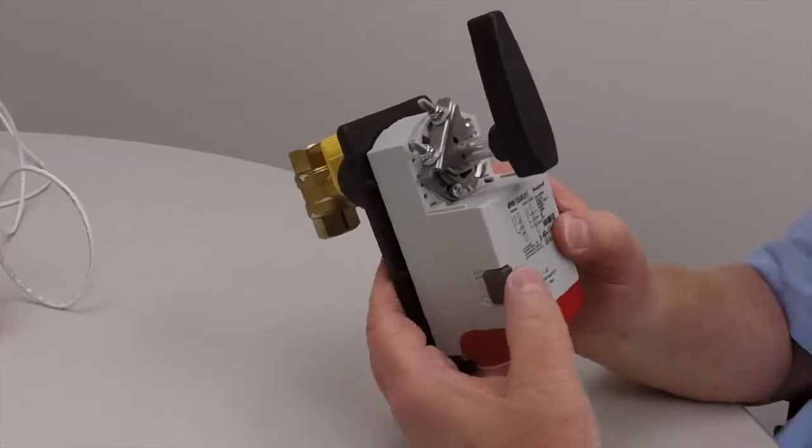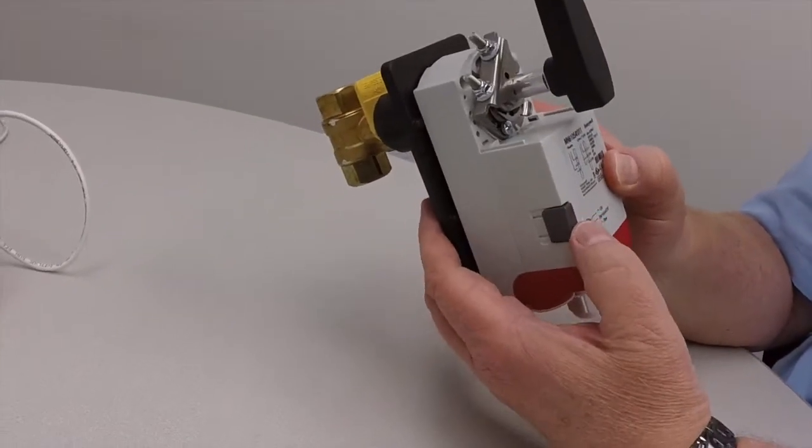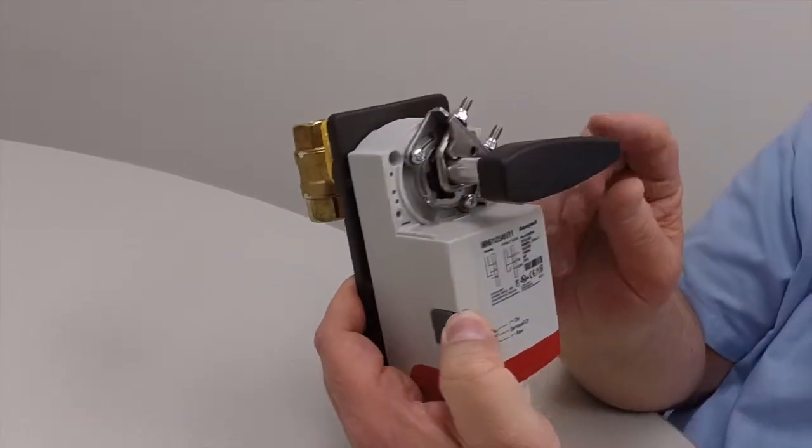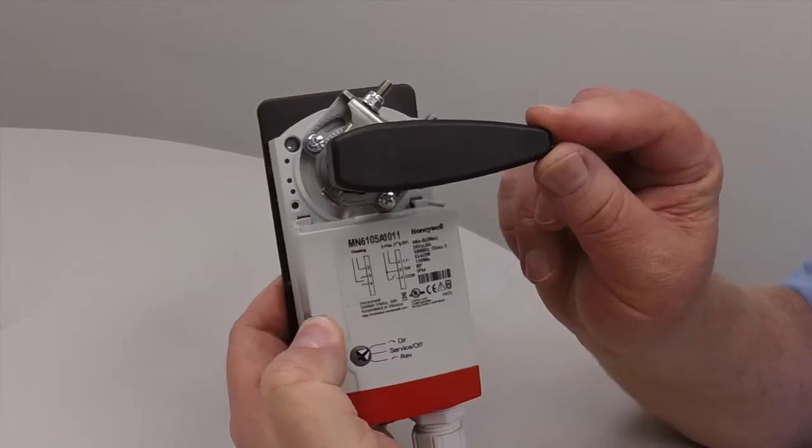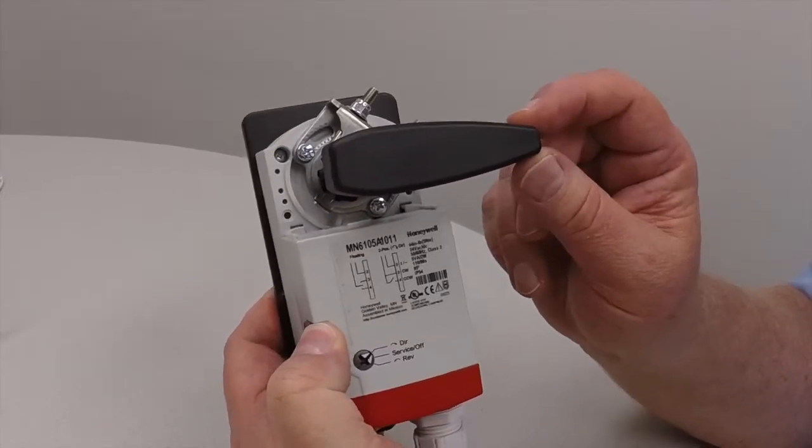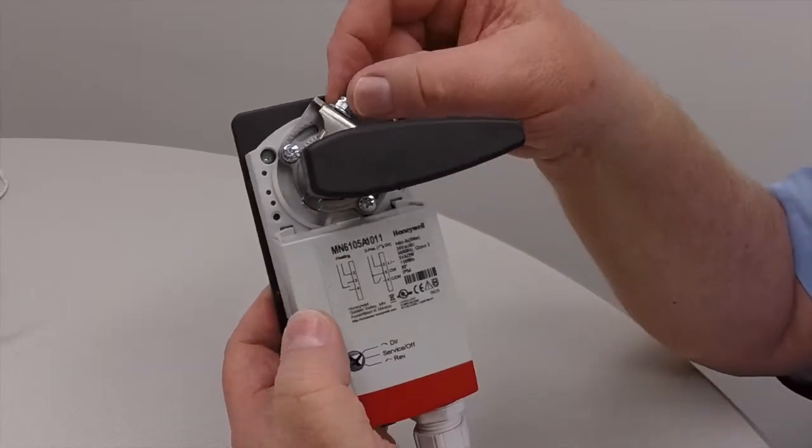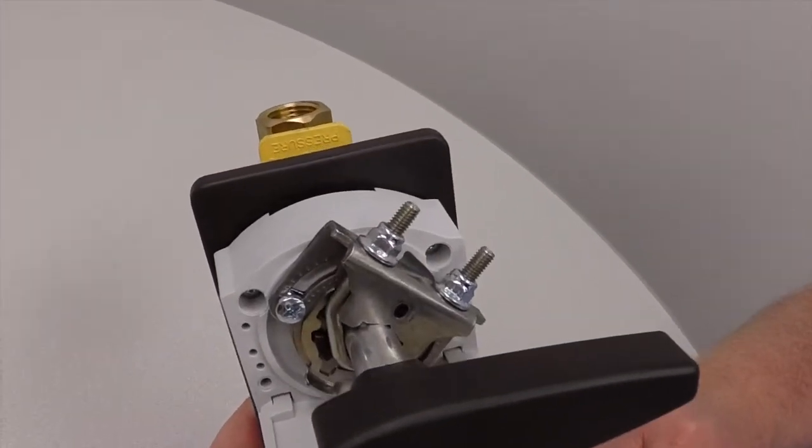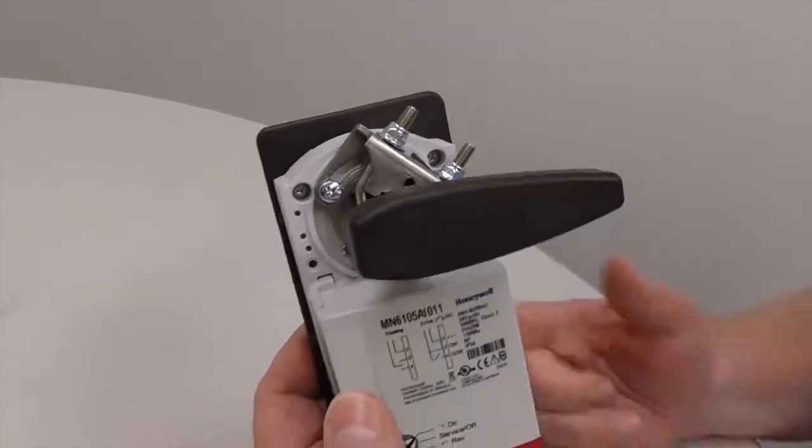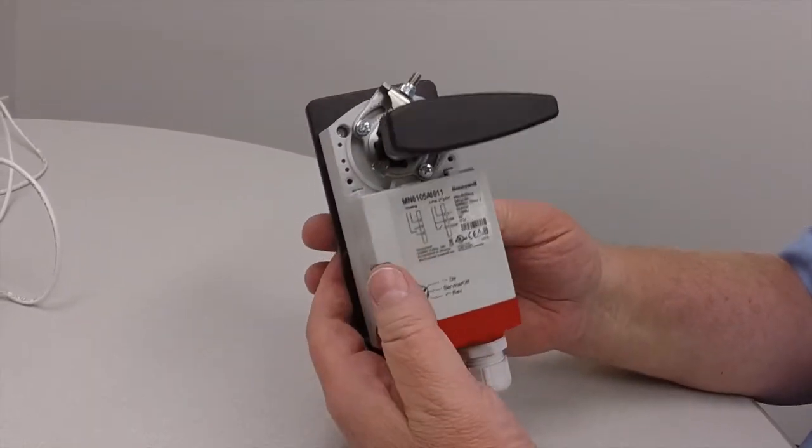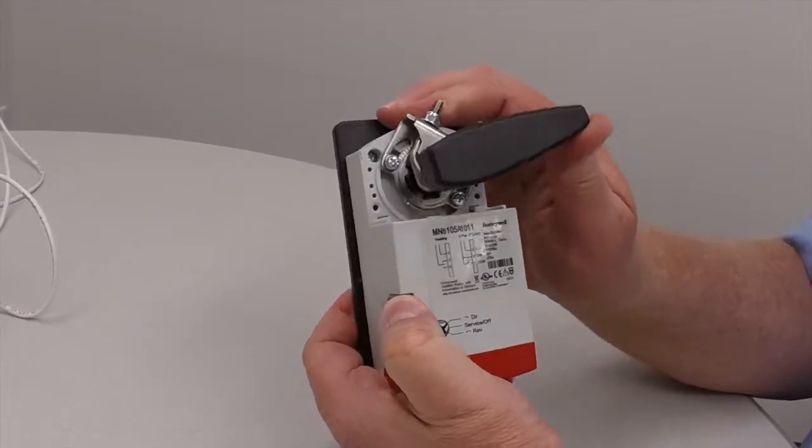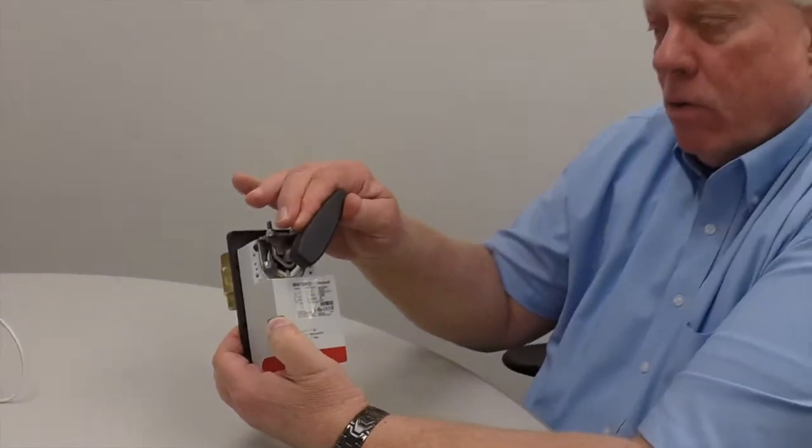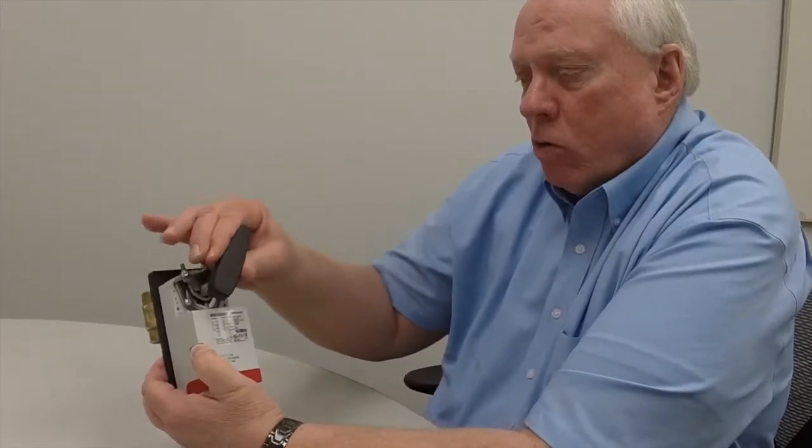If you drive the actuator to the closed position, then you want to turn the valve stem to the closed position and then tighten down the actuator onto the valve stem and it will be ready to go. Then you put it back in automatic and the valve will start controlling according to what signal it has, going to it either open or closed or somewhere in between.